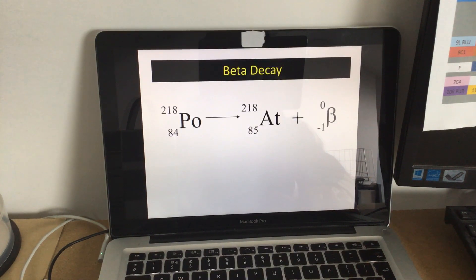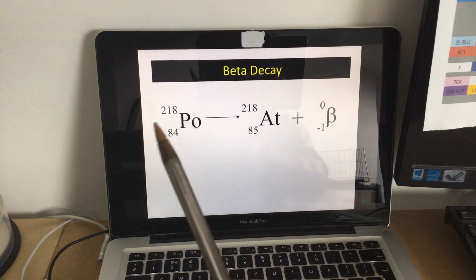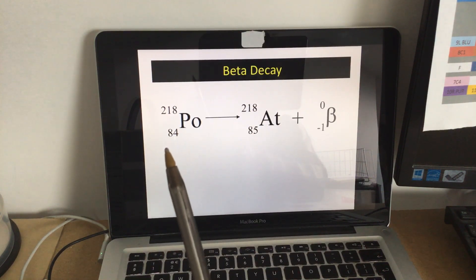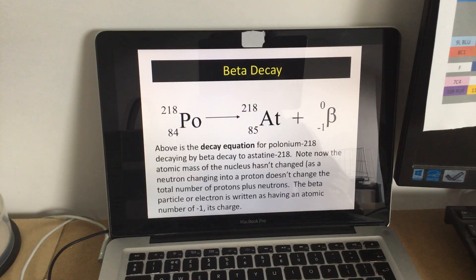So it looks like that, for example, polonium. There's your polonium. The top number stays the same, because there's the same number of protons and neutrons together, but the bottom number, there is now one more proton, plus the beta particle.